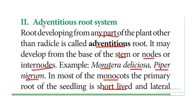The adventitious root system is a root system where roots develop from any part of the plant other than the radical. So the roots can develop from any part — not just the radical — and often form from the base of the stem.